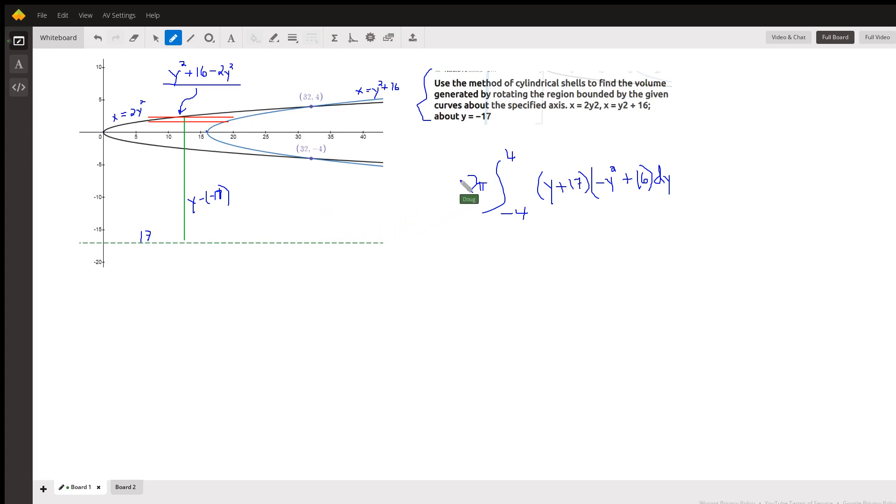The shell method says take 2 pi times a definite integral, in this case from negative 4 to 4, because we're integrating along the y-axis. Our axis of revolution is horizontal.